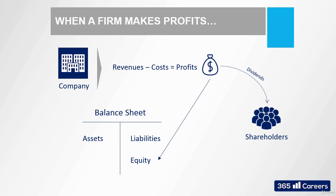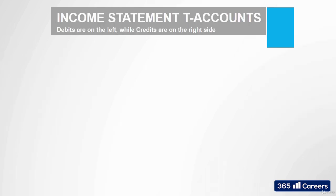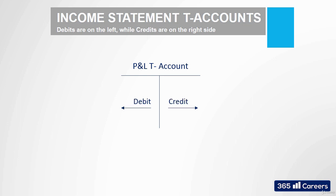Now, having said that, we are ready to learn how to work with T-accounts for income statement items. Similar to what we saw before, debits are on the left side, while credits are on the right side. This is something that will remain unchanged in all situations.